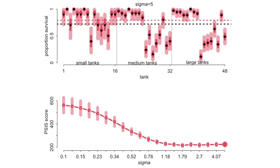There's a clear pattern: very low sigma is quite bad — this is a radically underfit model. As sigma increases, the PSIS score improves. But eventually, starting around 1.2, there cease to be any substantial improvements, and above about 3, the PSIS score actually starts to go up again. If we used even larger values of sigma, you'd see that trend continue.